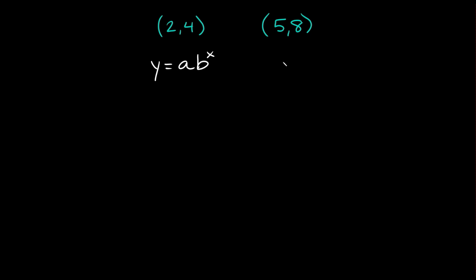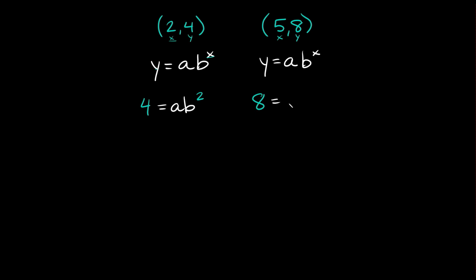Since we're given two points, we're going to want to use two of these equations. So y is equal to a times b raised to the x. Here (2, 4) are our x and y coordinates, so x is 2 and y is 4. We plug those in: 4 is equal to a times b raised to the 2nd. And doing the same thing for the other point — 5 is our x, 8 is our y — so we get that 8 is equal to a times b raised to the fifth power.